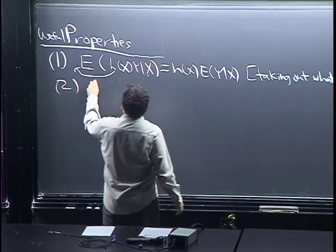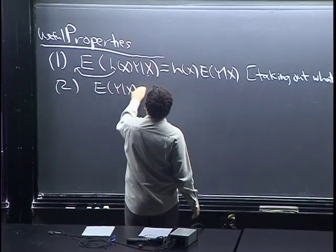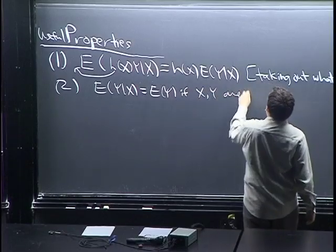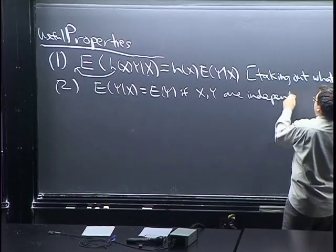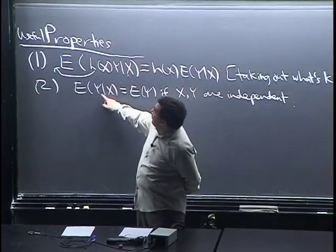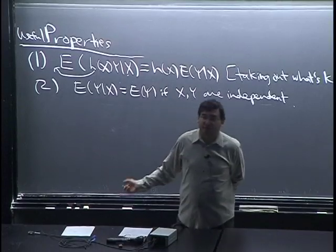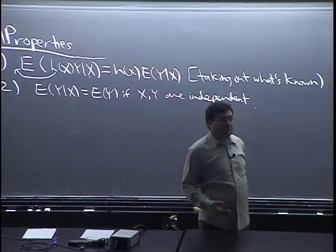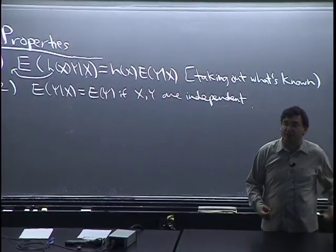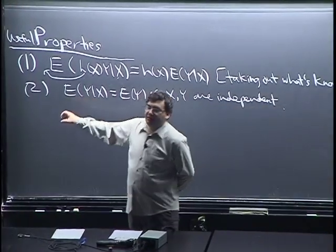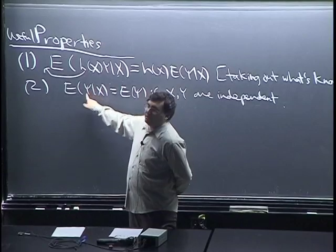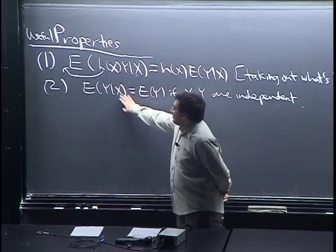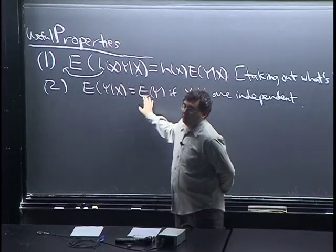Property two: E of Y given X equals E of Y if X and Y are independent. Note this is not if and only if — we just saw an example where E of X given X squared is 0 even though they're not independent. But if they are independent, then the conditional distribution of Y given X is no different from the unconditional one, so knowing X doesn't help predict Y at all.